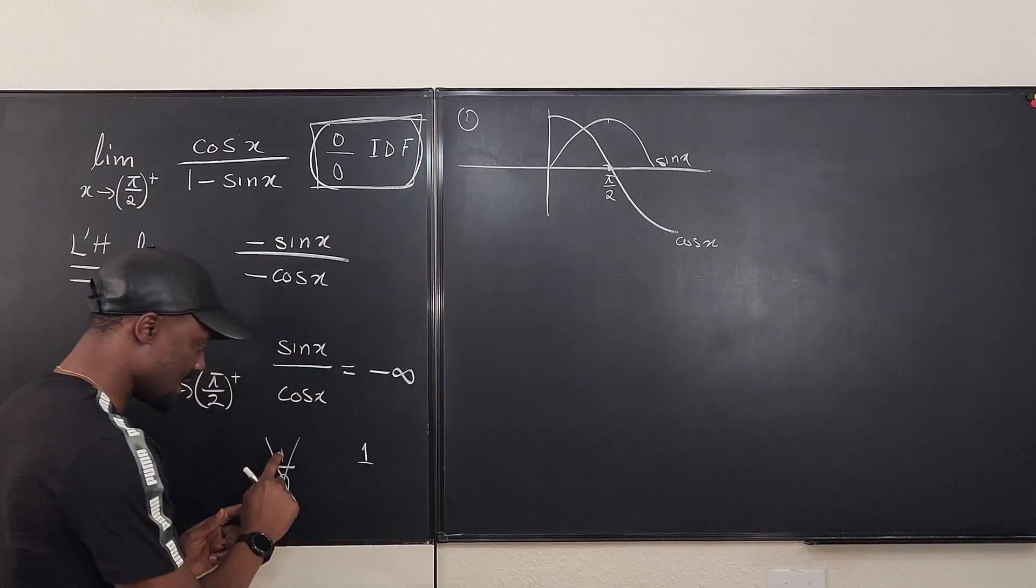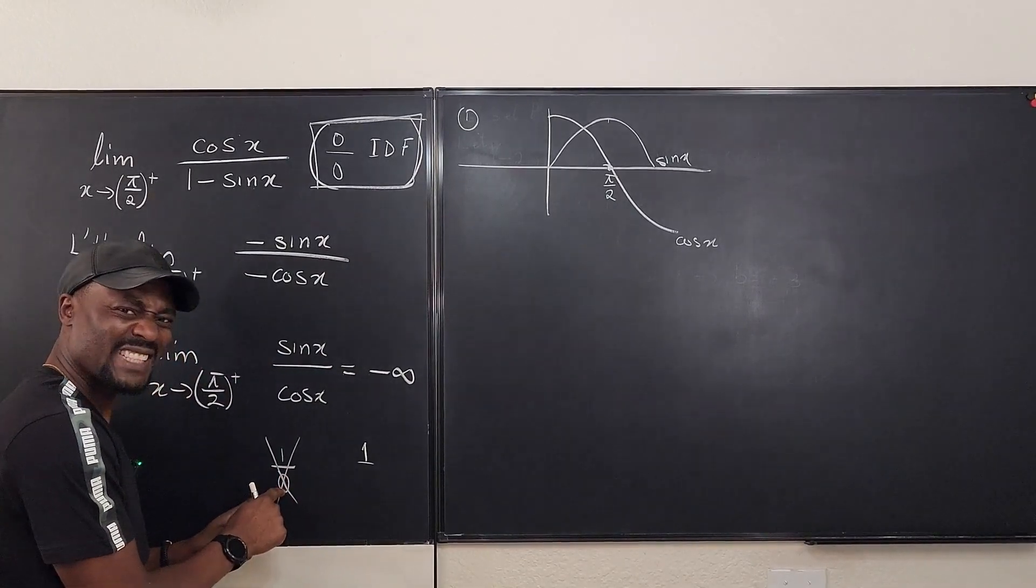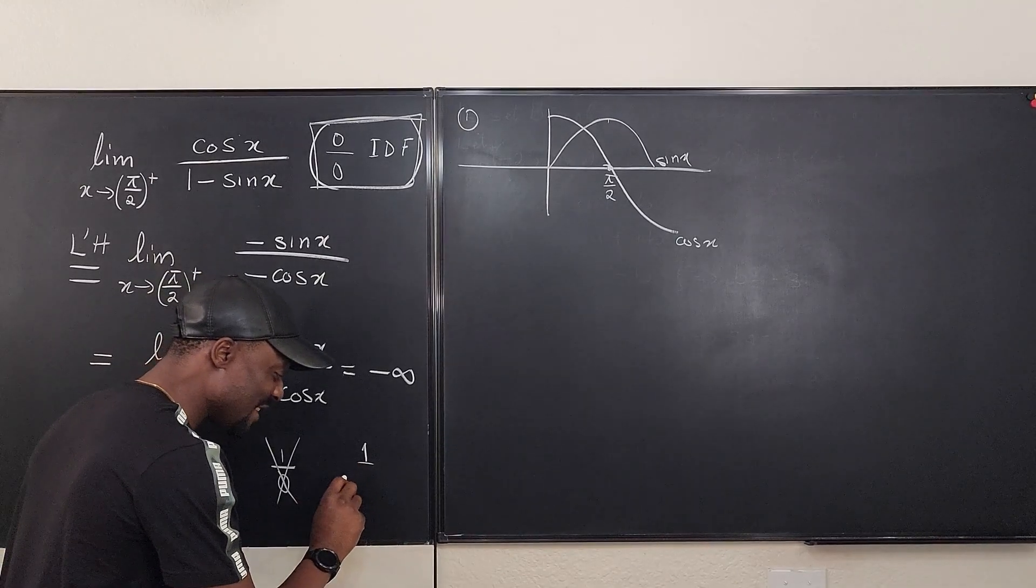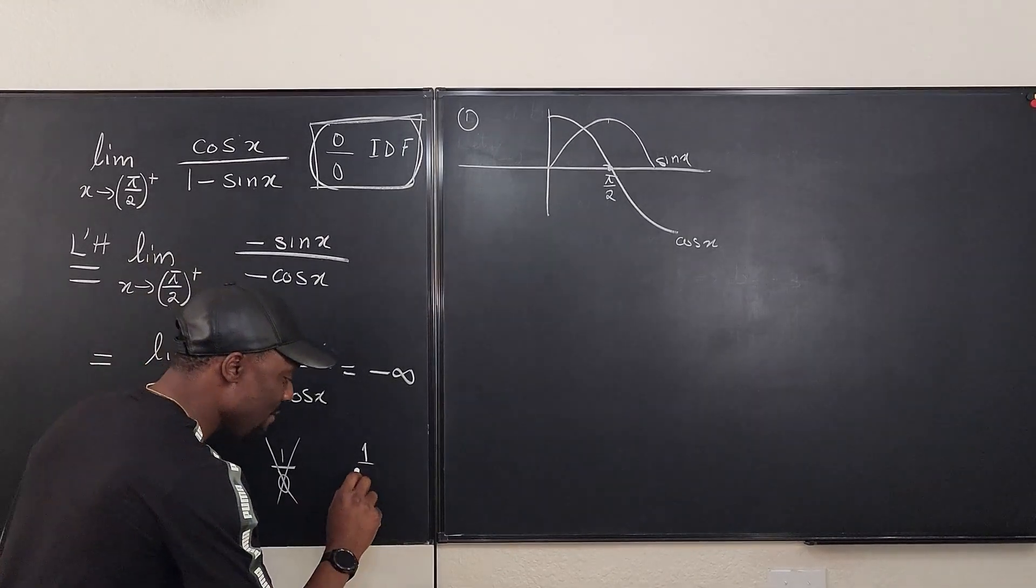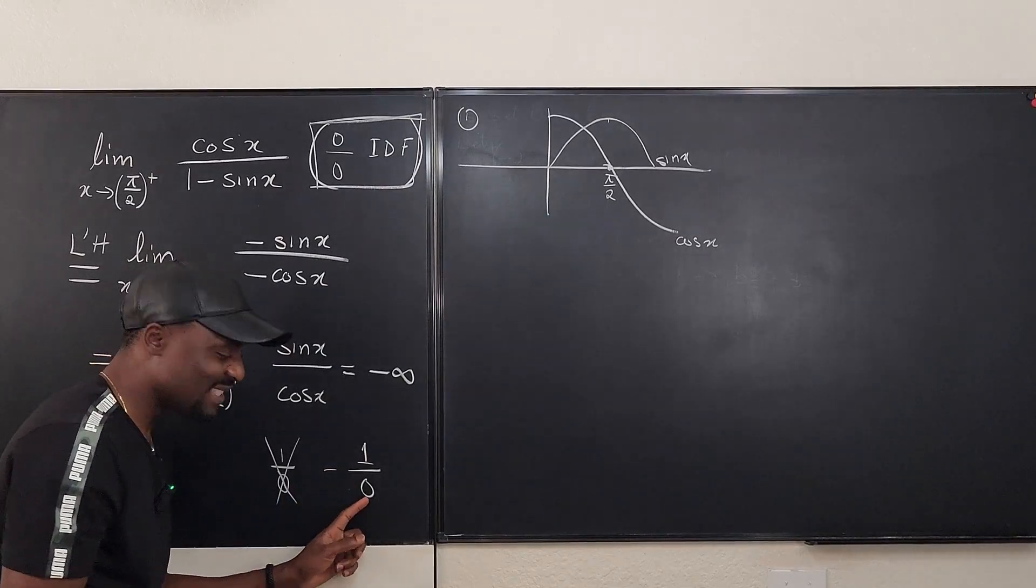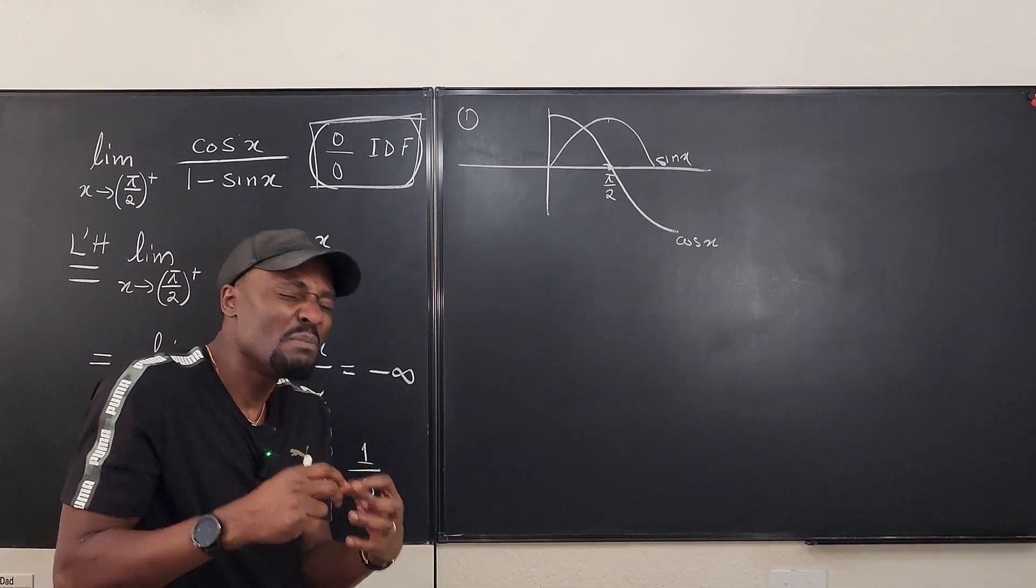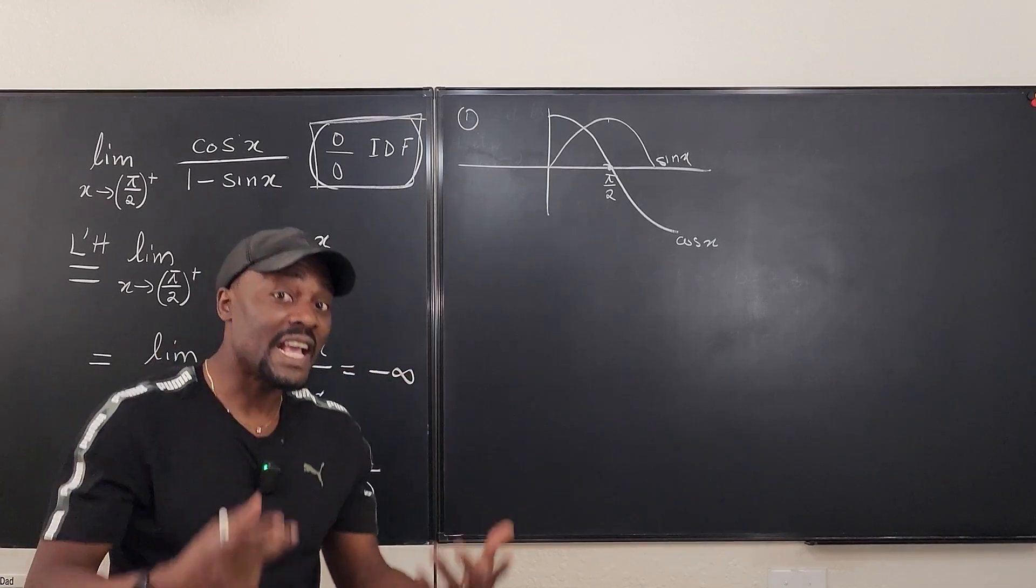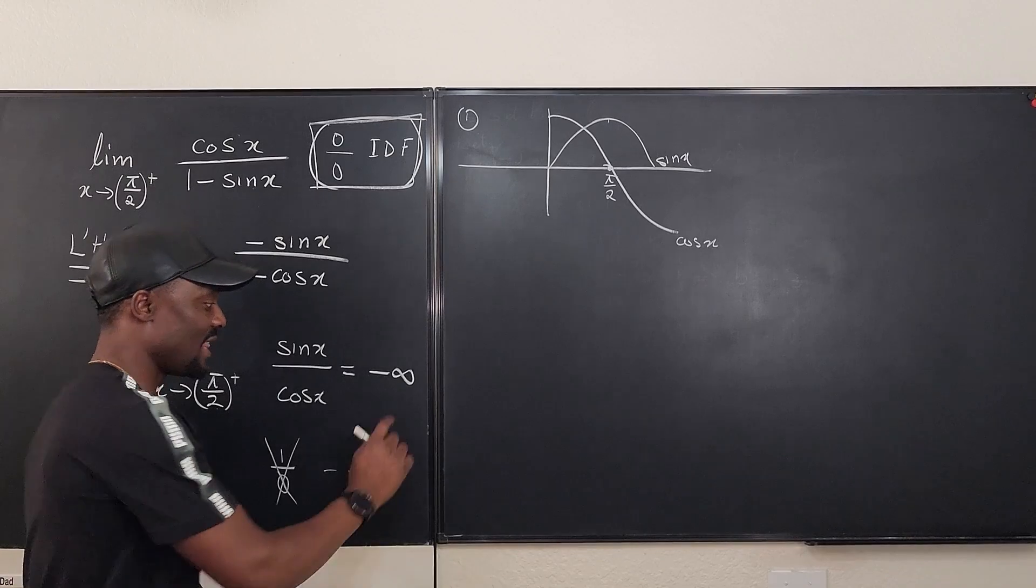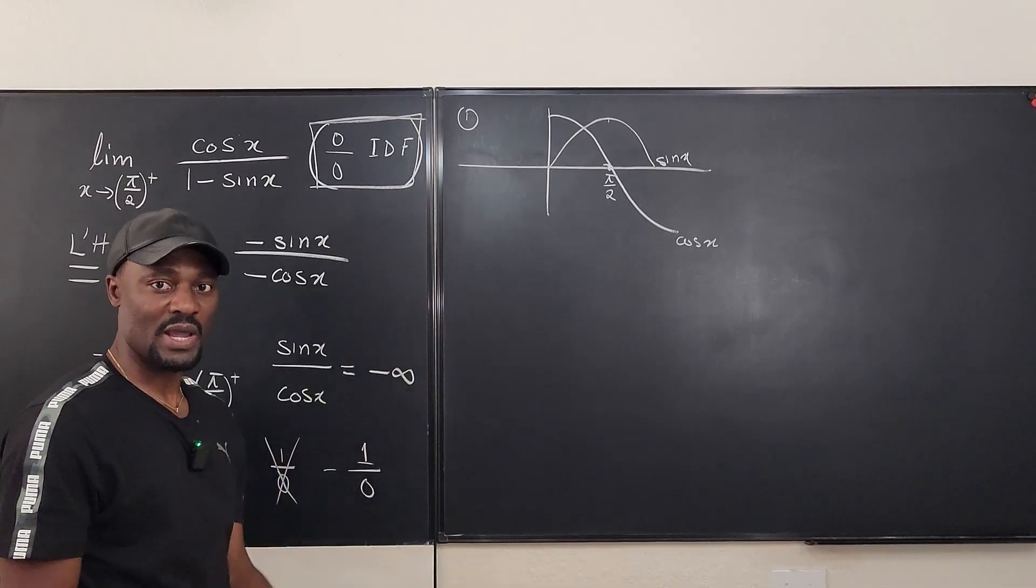So even if we assume that this is 1 over 0, this is not exactly 0. It's almost 0, but it's a negative number. So when you have your 1 over 0, it is still a negative infinity because this is an infinitely small negative number. So you have to recognize that negative. And that's how we decide it's negative infinity. That's one way.